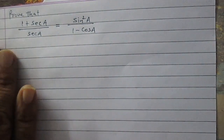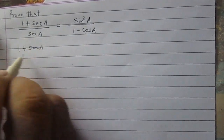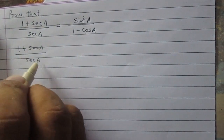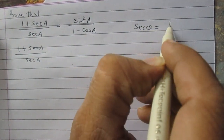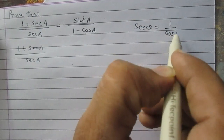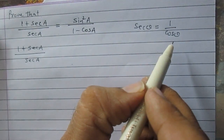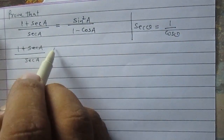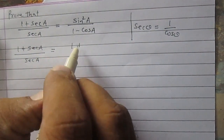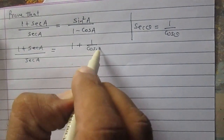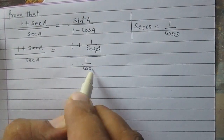Let us consider the left hand side. The left hand side is (1 + sec a) whole divided by sec a. We know that sec theta is the reciprocal of cos theta, so sec theta can be written as 1 upon cos theta. Using this identity, we can write the left hand side as (1 + 1 upon cos a) whole divided by 1 upon cos a.